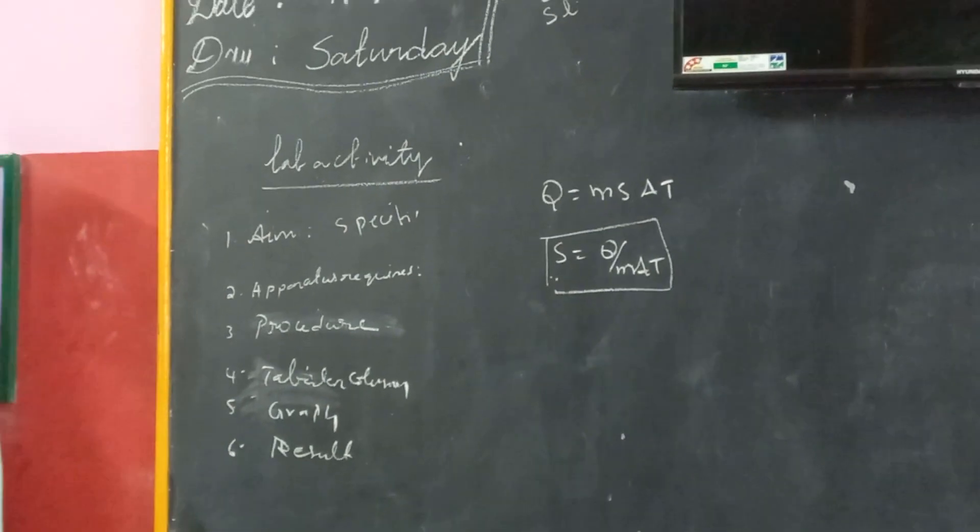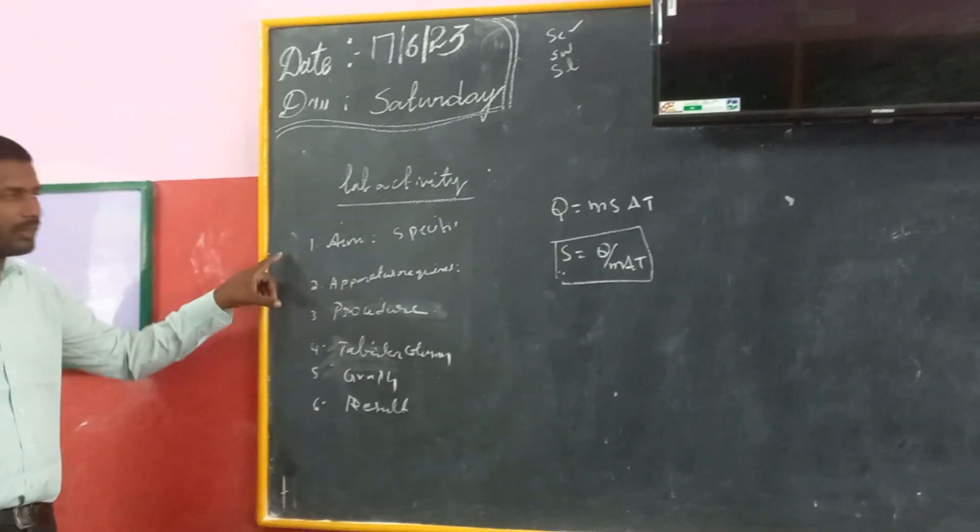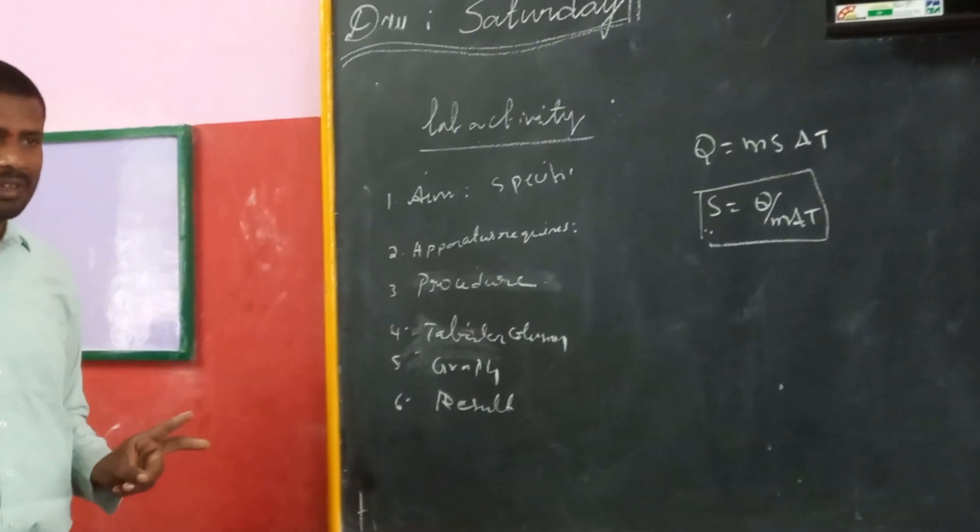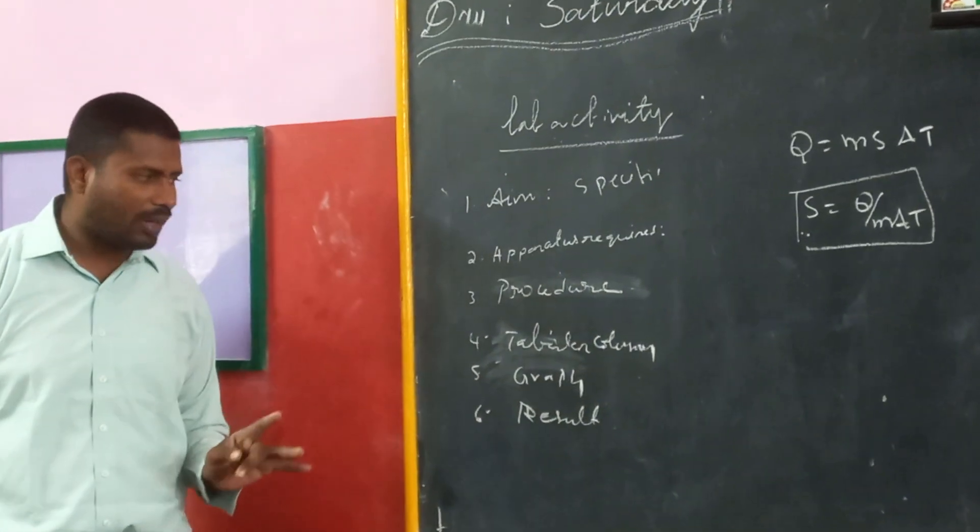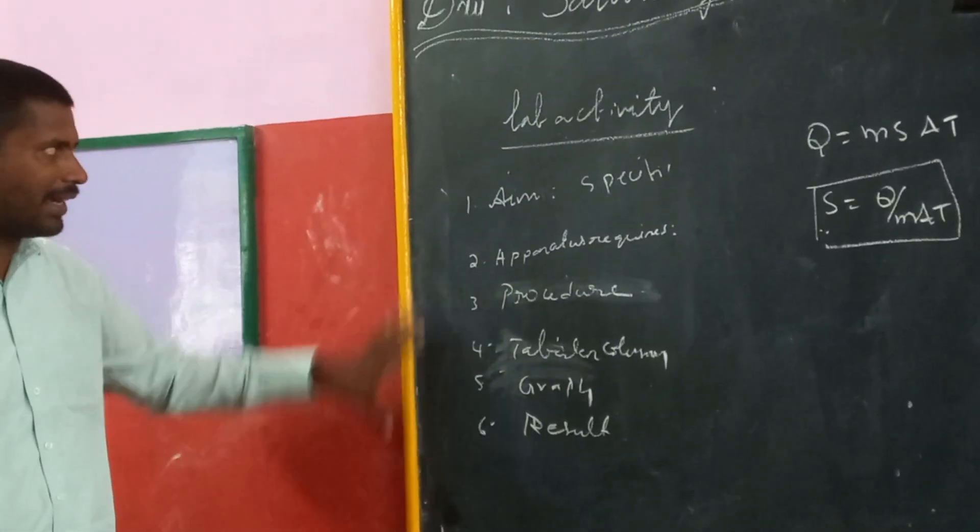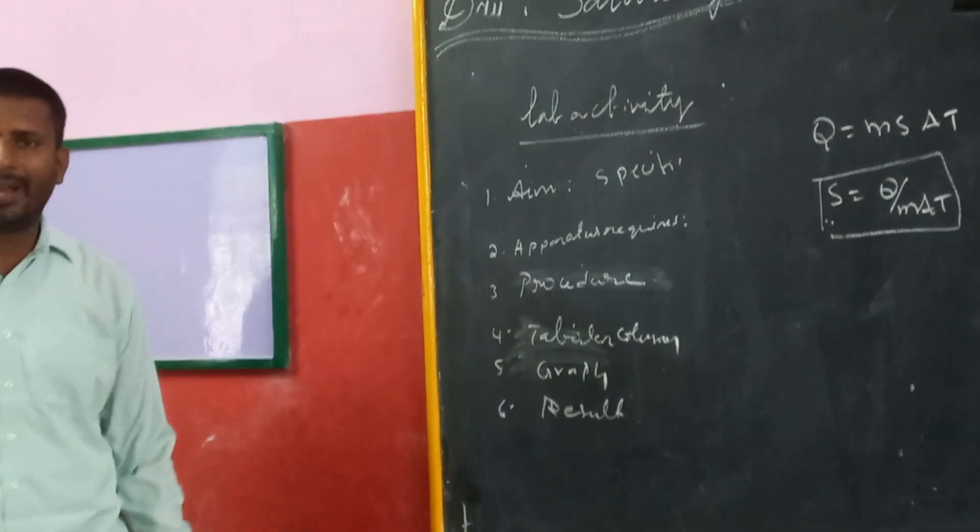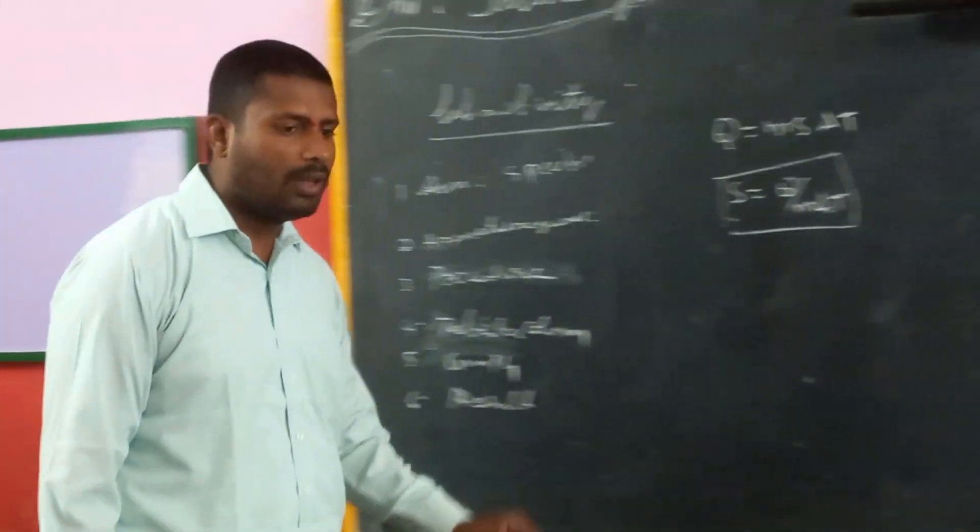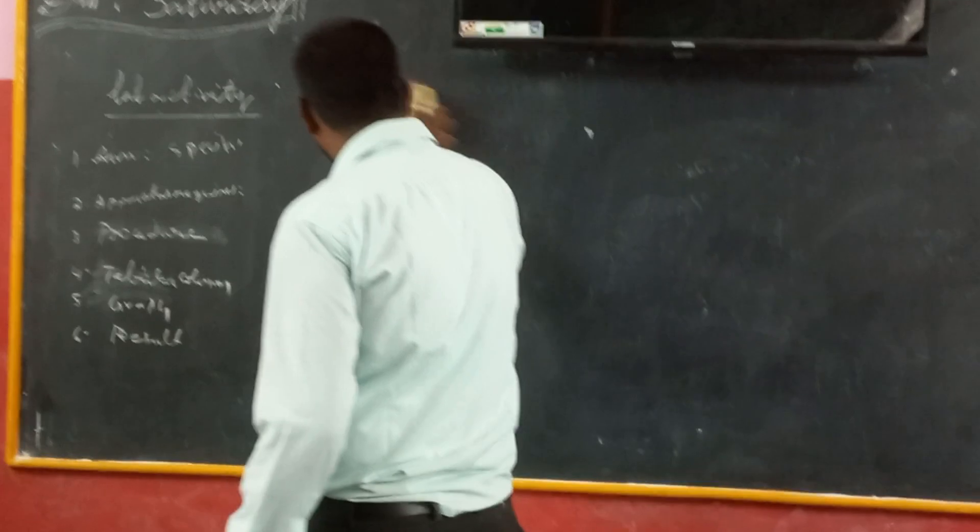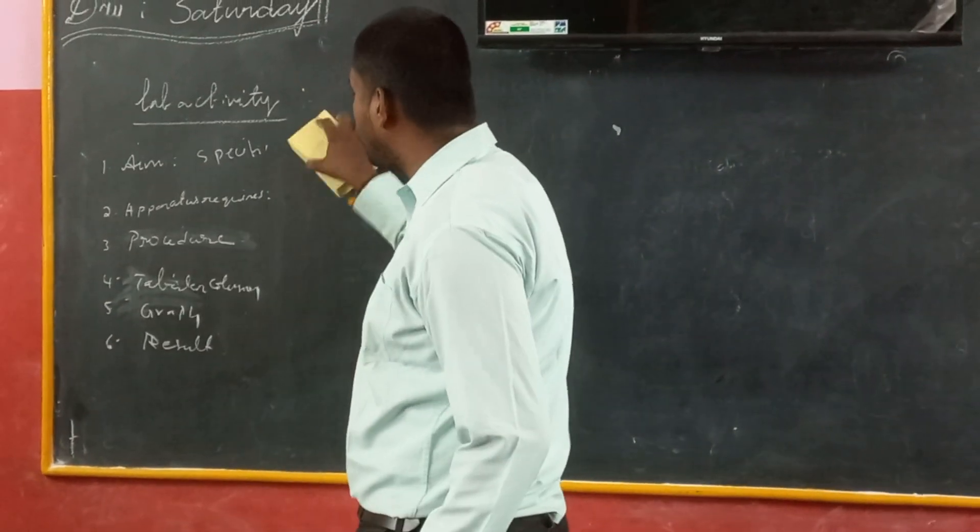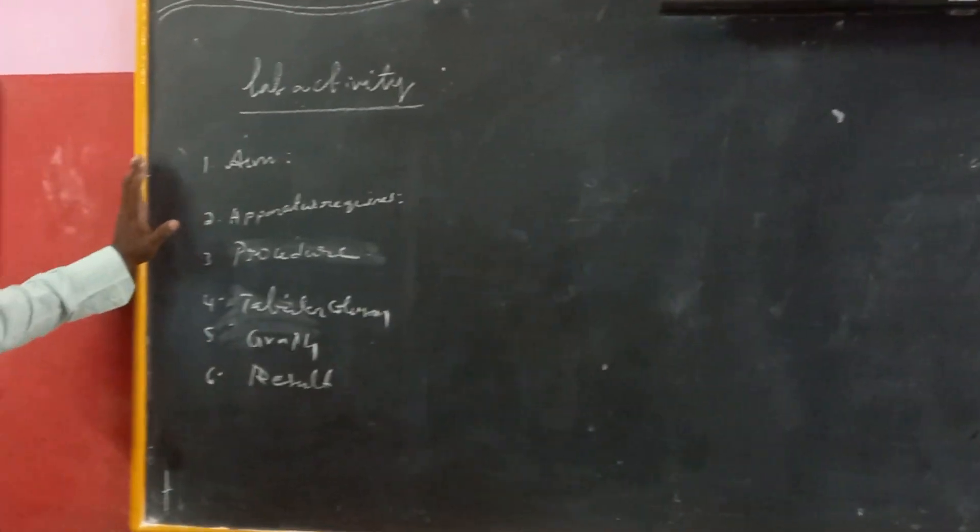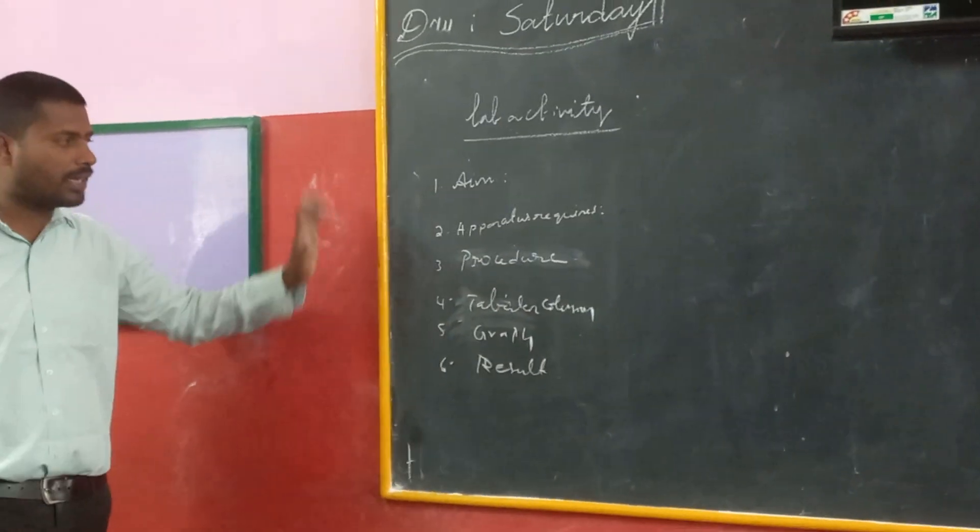When we are doing any lab activity, the thing we have to do is we have to find out what is the aim, what are the apparatus required or materials required, what is the procedure, then tabular column, then graph, finally result. After getting the result only, the lab activity will be completed. In this class, we are going to perform a lab activity regarding specific heat of a solid experimentally by using calorimeter. Aim: to find out specific heat of a solid experimentally by using calorimeter.